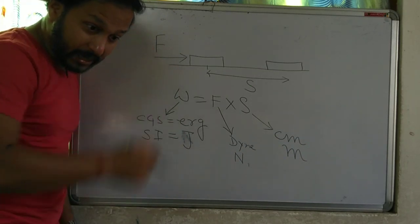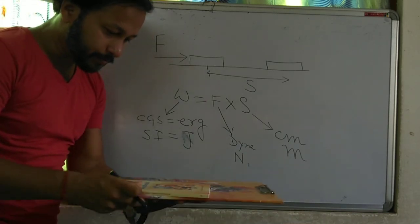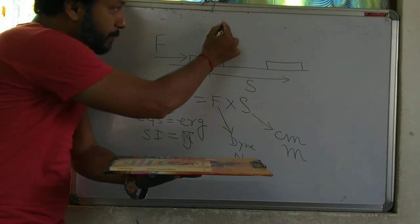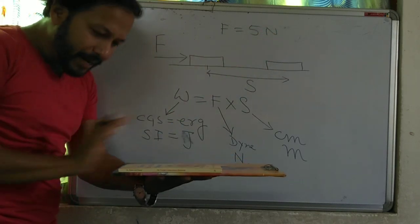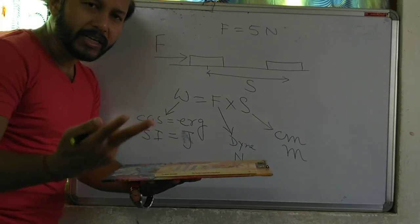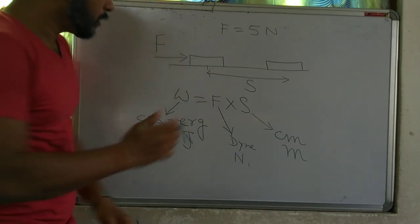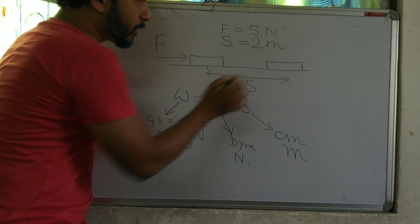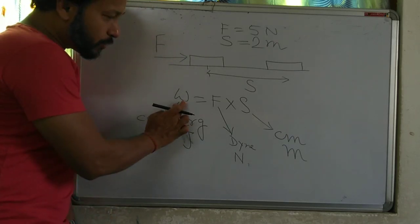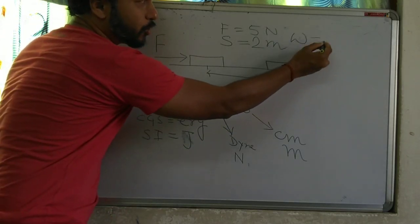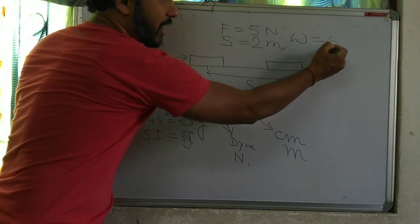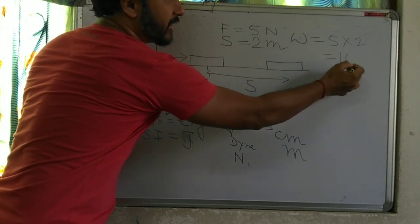Say on this book I have applied a force of 5 Newton, and because of that force the book covered a distance of 2 meter. So what is the work done? We know that work equals force into displacement. Here, my force is 5 Newton and my displacement is 2 meter. So work done equals 5 into 2, that is 10 Joule.